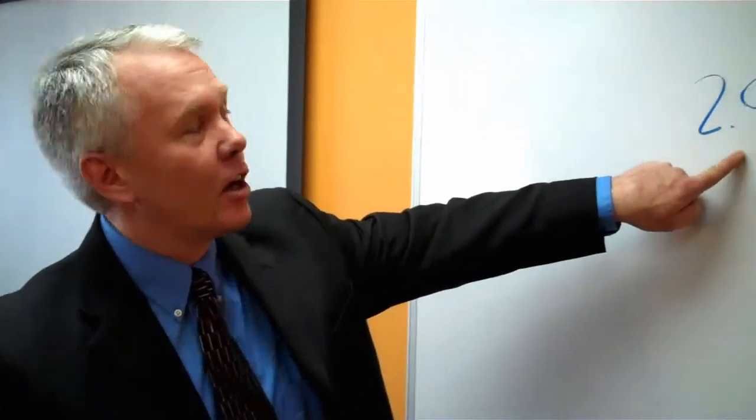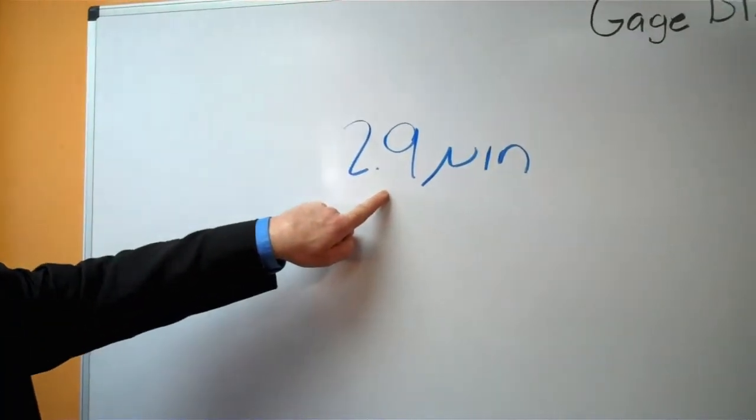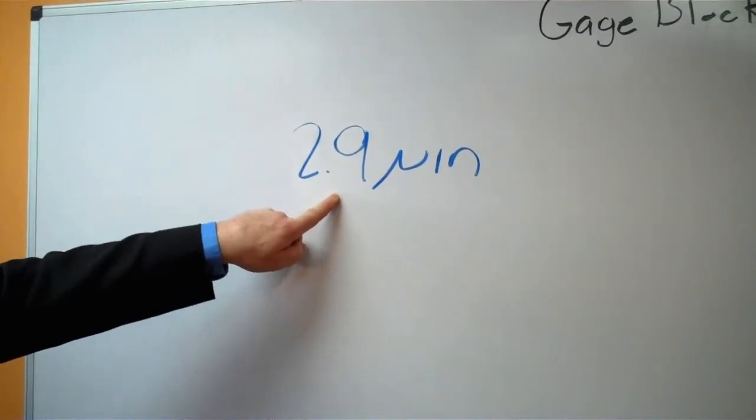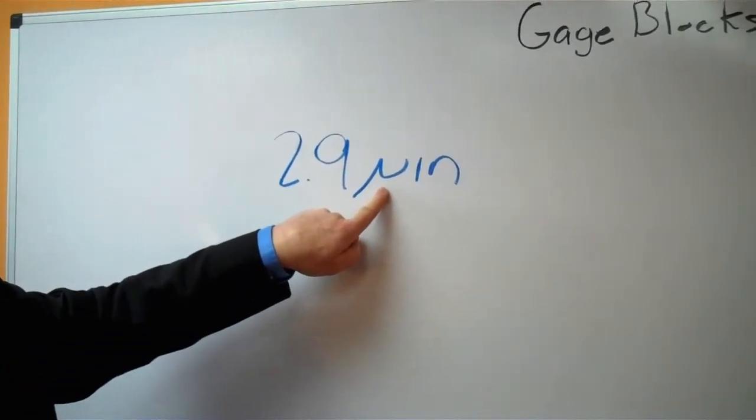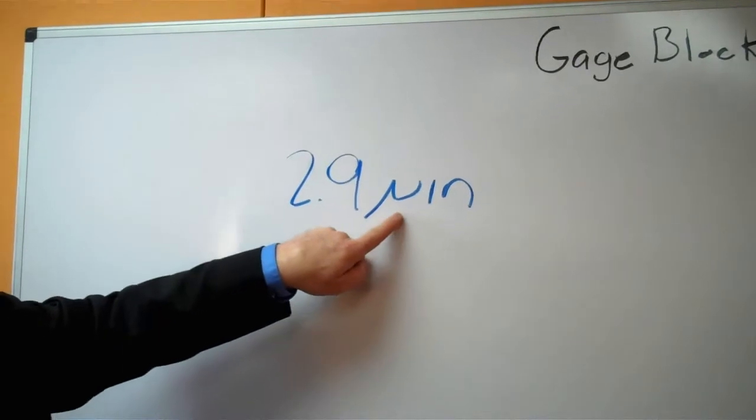Since we said the gauge block we measured was a one inch block and had an error of zero, meaning it was exactly one inch, and it had an uncertainty of 2.9 micro inches, a lot of times people, the next question will ask, well, what is this little symbol here in front of the micro or the inch? It's a micro symbol.